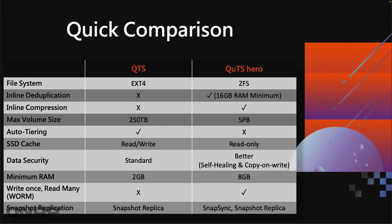The next feature is auto tiering — by this I mean SSD auto tiering. If you've got different tiers of performance in your storage — perhaps some SATA hard drives, some SATA SSDs, and some NVMe SSDs — with auto tiering you can set priorities based on which data is 'hot' to move data up through the tiers for better performance. This happens automatically. Auto tiering is available on QTS, but it is not currently possible in QUTS Hero.